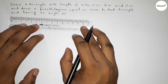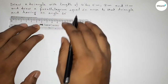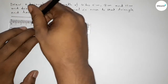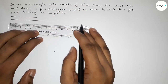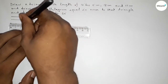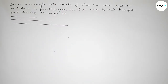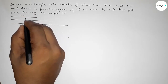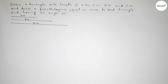First, let's look at the three given sides: 5 centimeter, 8 centimeter, and 11 centimeter. So this line equals 5 centimeter, this line equals 8 centimeter, and this one equals 11 centimeter.